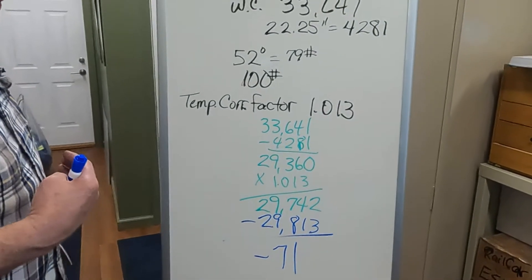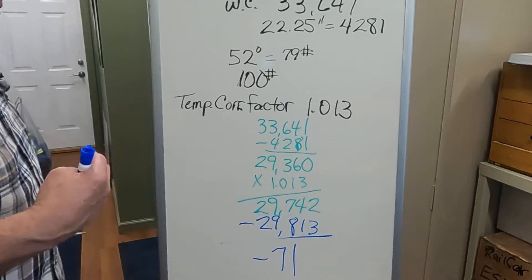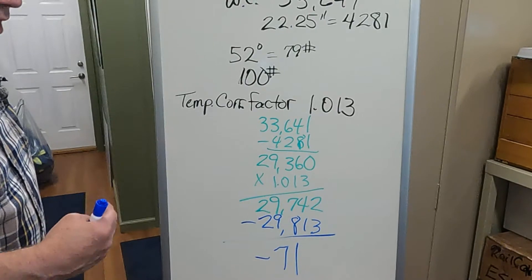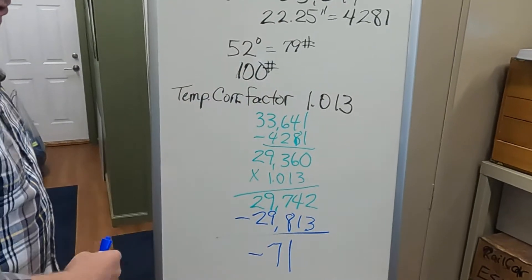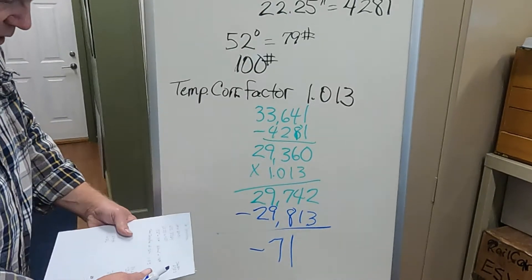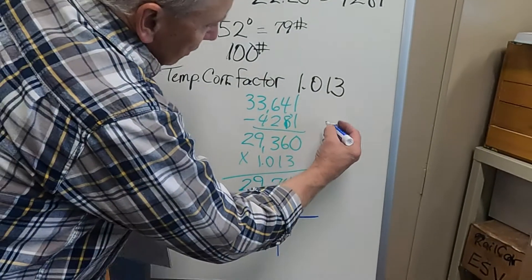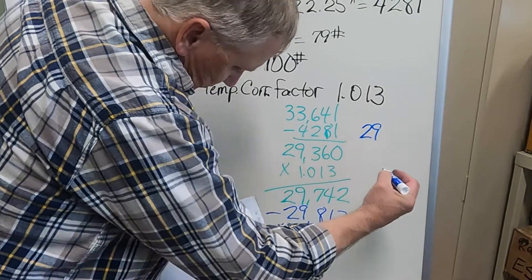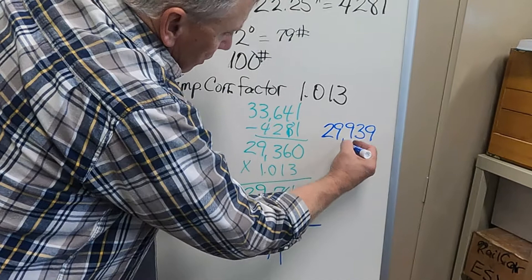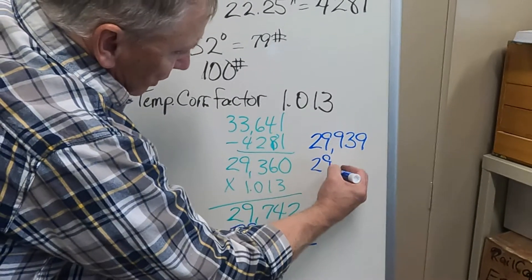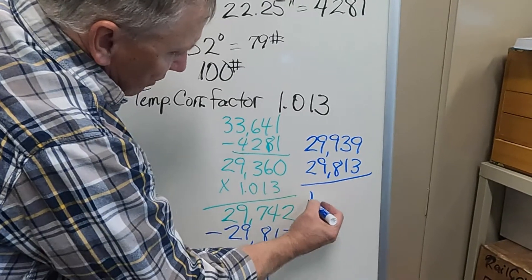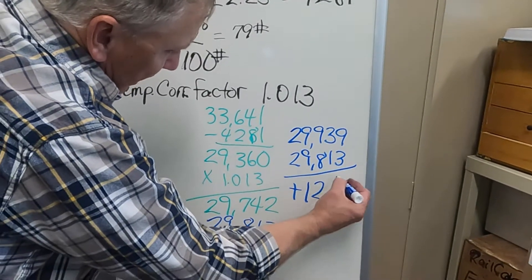I have, my company uses a proprietary rail car calculation sheet. I ran all of these numbers through my calculation sheet. I came up with a net of 29,939. So when I minus out what the BOL says, 29,813,